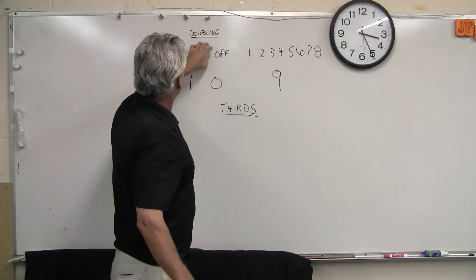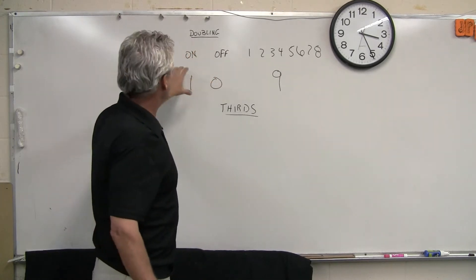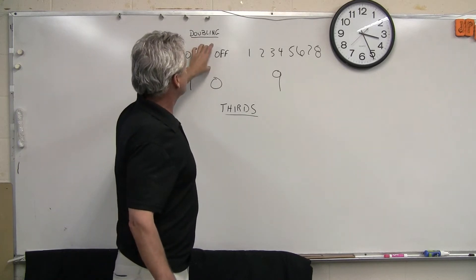So the binary code that we're using with the semiconductors, right? On and off, yes or no, that represents the doubling.